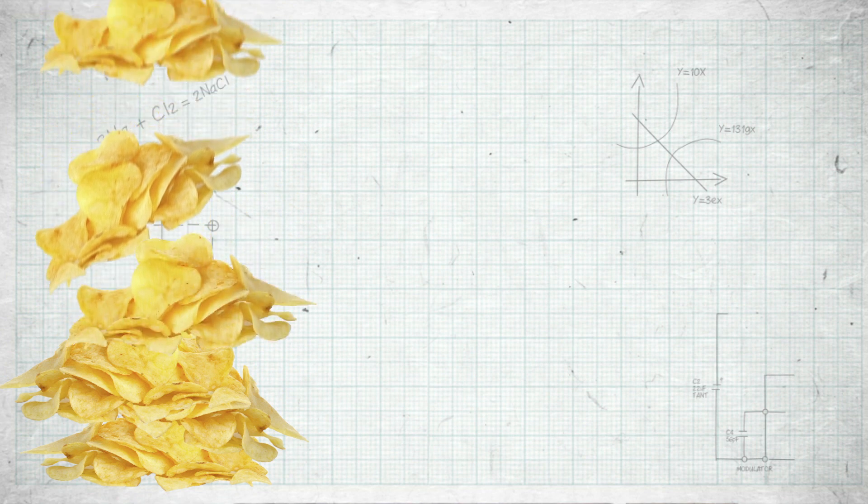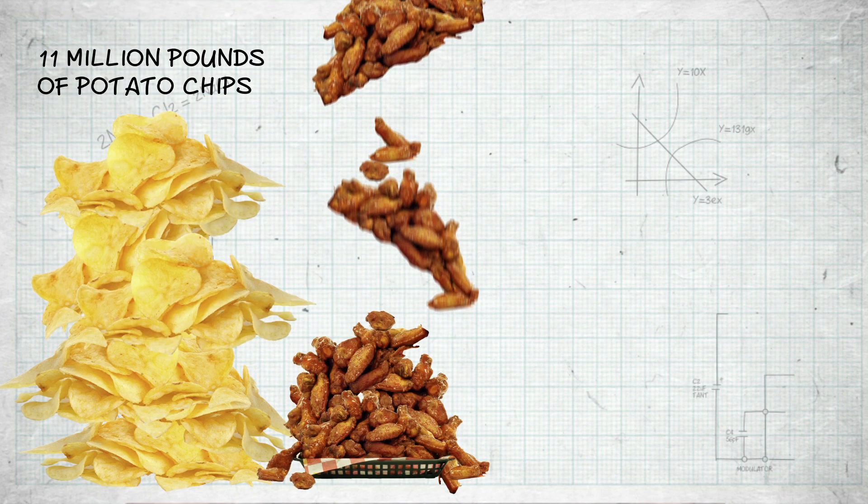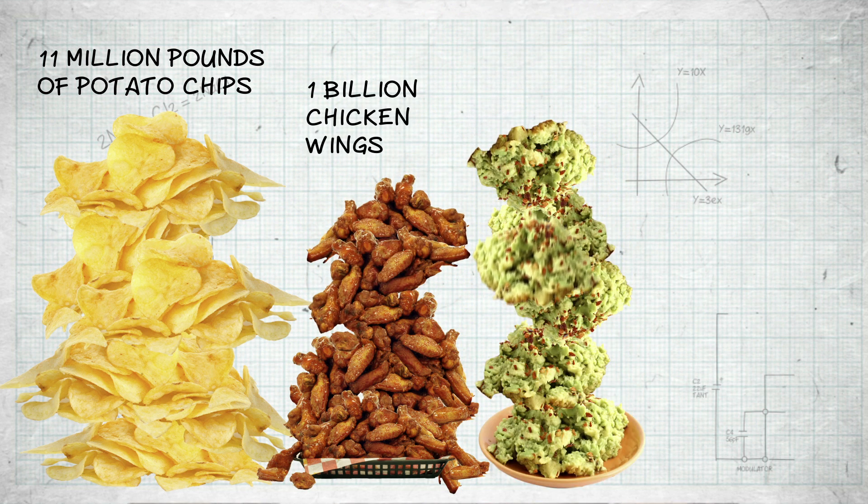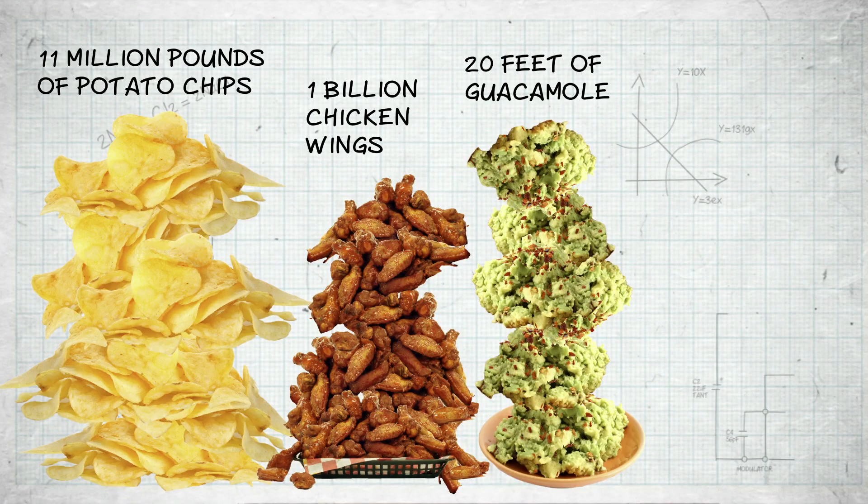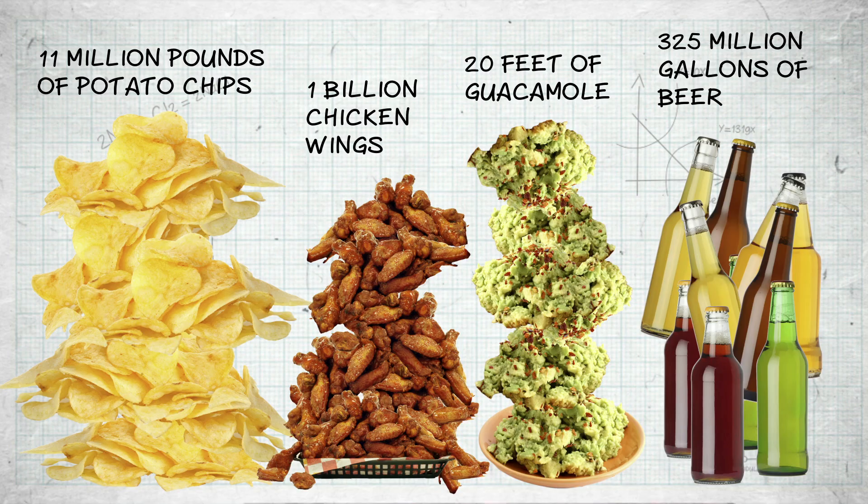On the day, Americans will consume over 11 million pounds of potato chips, over one billion chicken wings, and enough guacamole to cover the whole of a football field with avocados to a depth of 20 feet. Game fans will also see away more than 325 million gallons of beer. That's enough to easily fill 500 Olympic swimming pools.